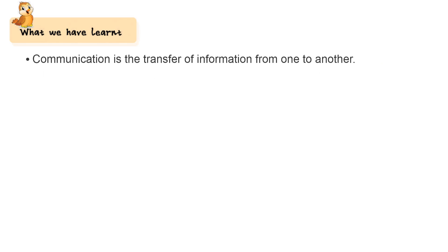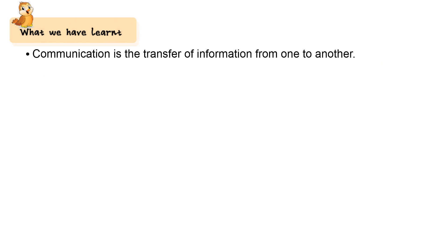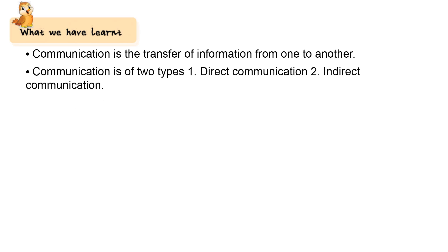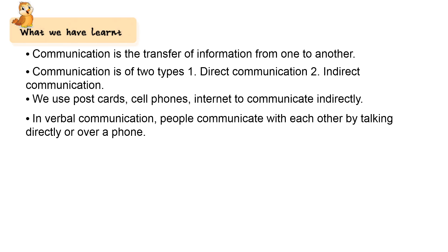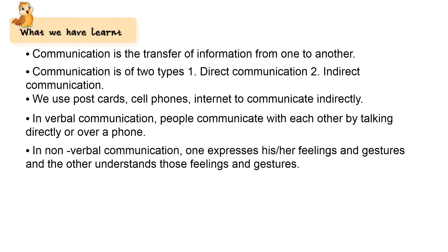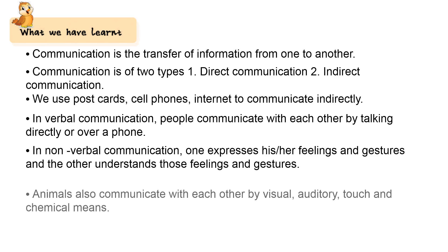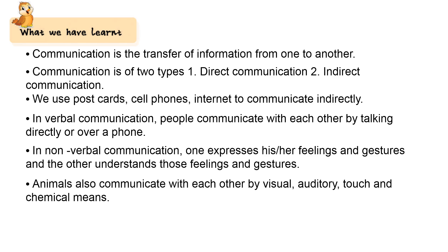What we have learnt: Communication is the transfer of information from one to another. Communication is of two types — direct and indirect. We use postcards, phones, and the internet to communicate indirectly. In verbal communication, people communicate by talking directly or over a phone. In non-verbal communication, one expresses feelings and gestures and the other understands them. Animals also communicate with each other by vision, auditory, touch, and chemical means.